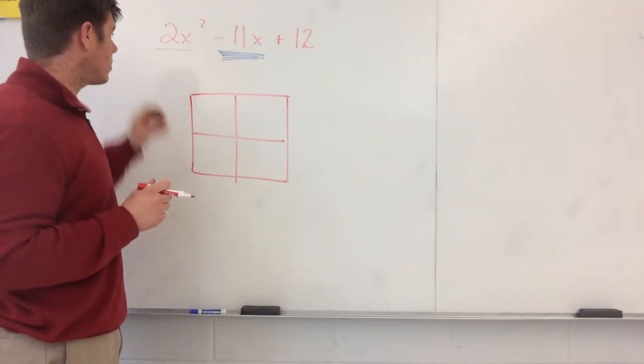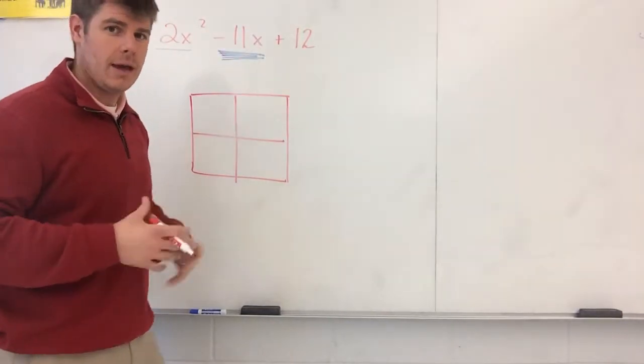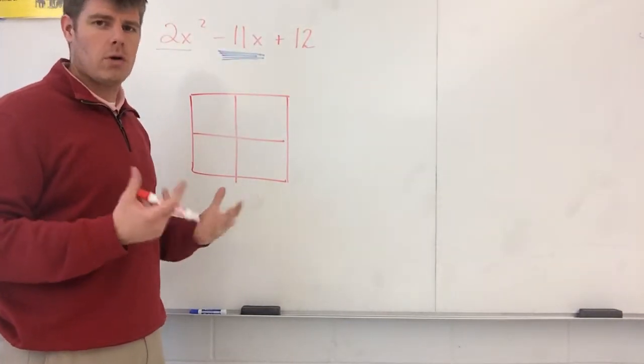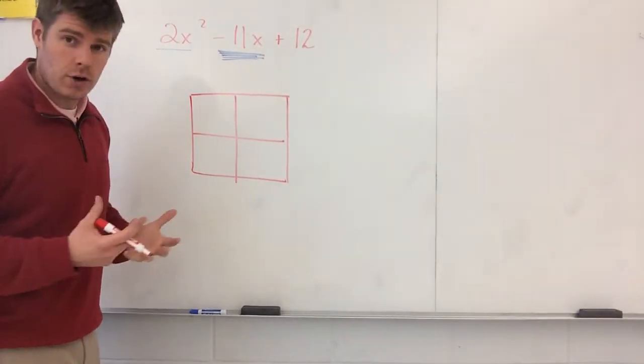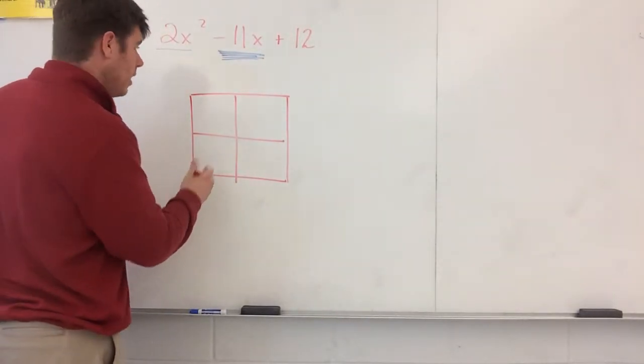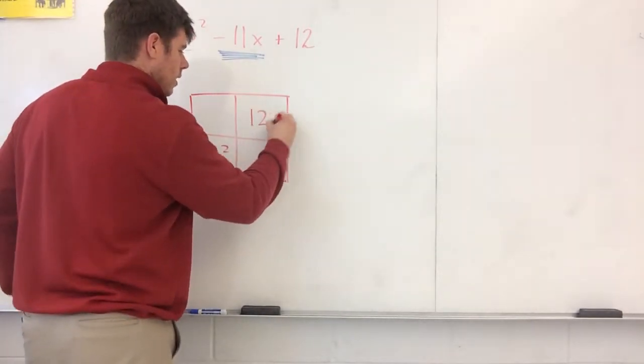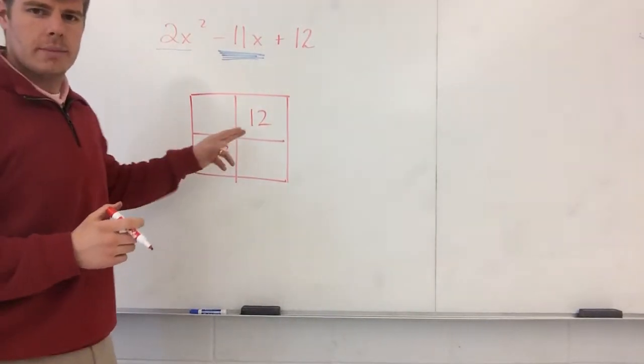So one of the things we need to take notice of is 2X squared wasn't combined with anything and this 12 wasn't combined with anything. And this is something that is special for all quadratics that are trinomials, that are binomial times a binomial. So what I have here now is that this 2X squared into this next step, we just fill it in, 2X squared and 12. So this is step two.